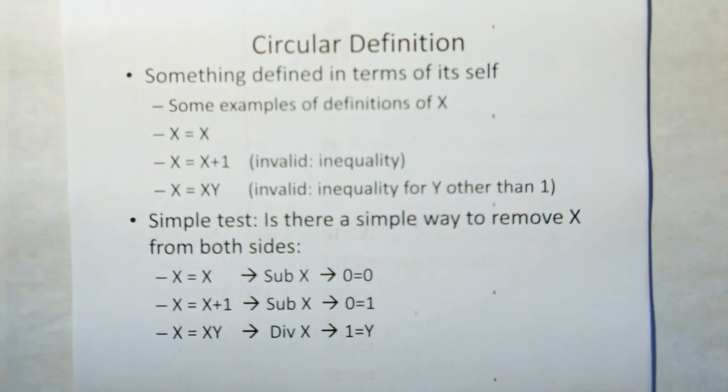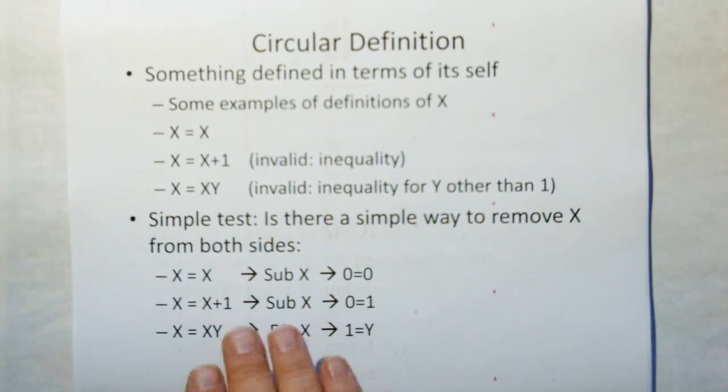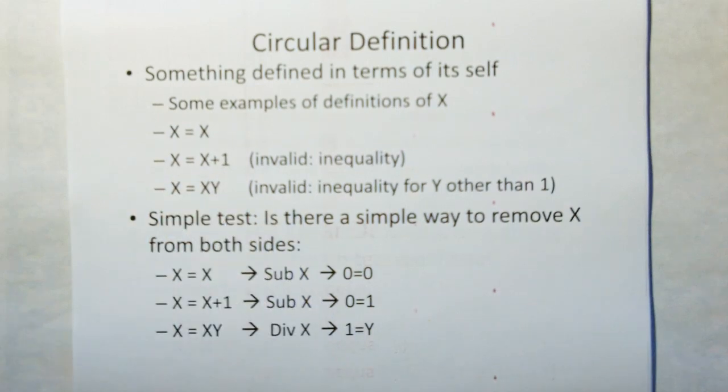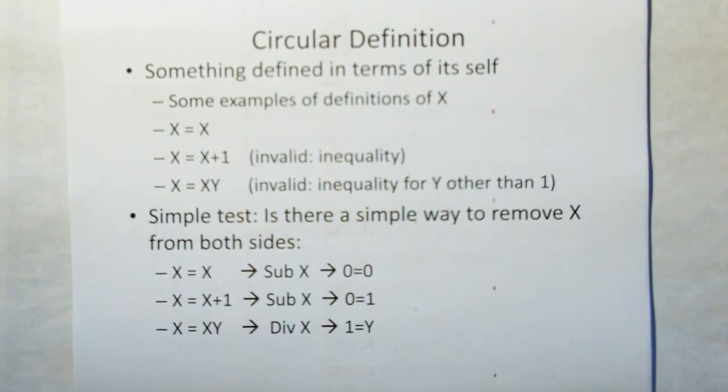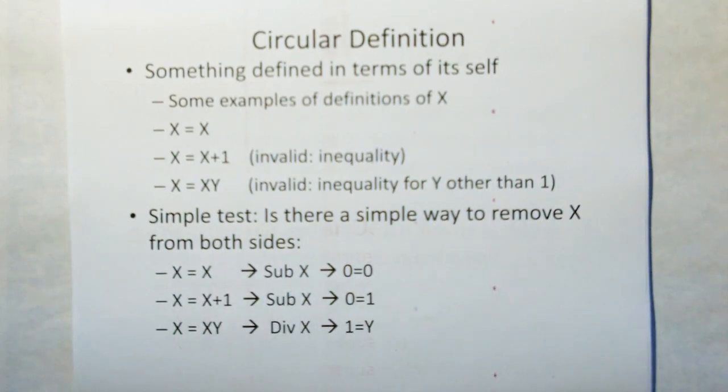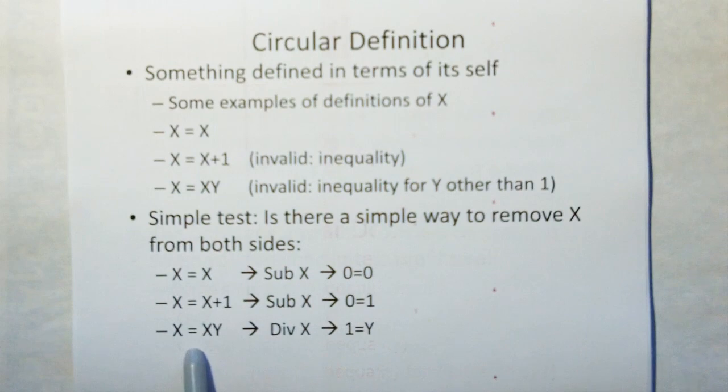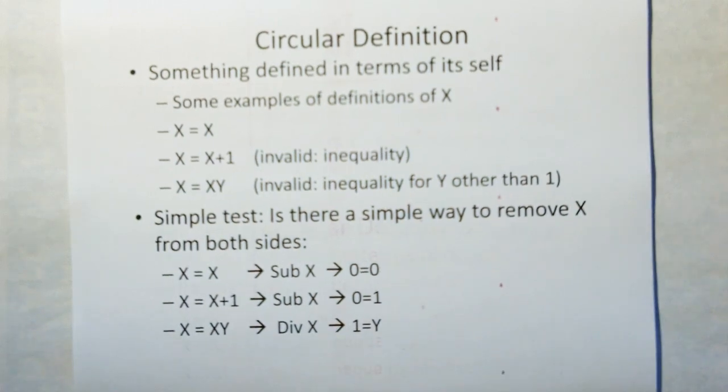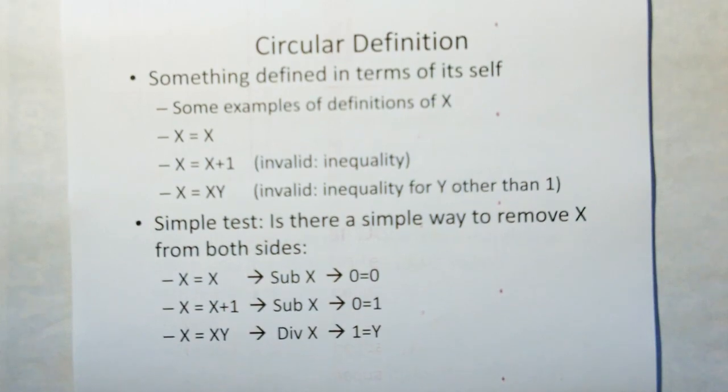Now, the simple test to see if something is a circular definition is to do a mathematical operation on these to see if you could remove X from both sides. In this case here, you just subtract X from both sides and you get 0. Again, this one, you subtract X from both sides and you get 0 equals 1, which is an inequality. And this side, you can divide both sides by X and you get 1. And so the definition of X falls out. That's a way to test for a circular definition.